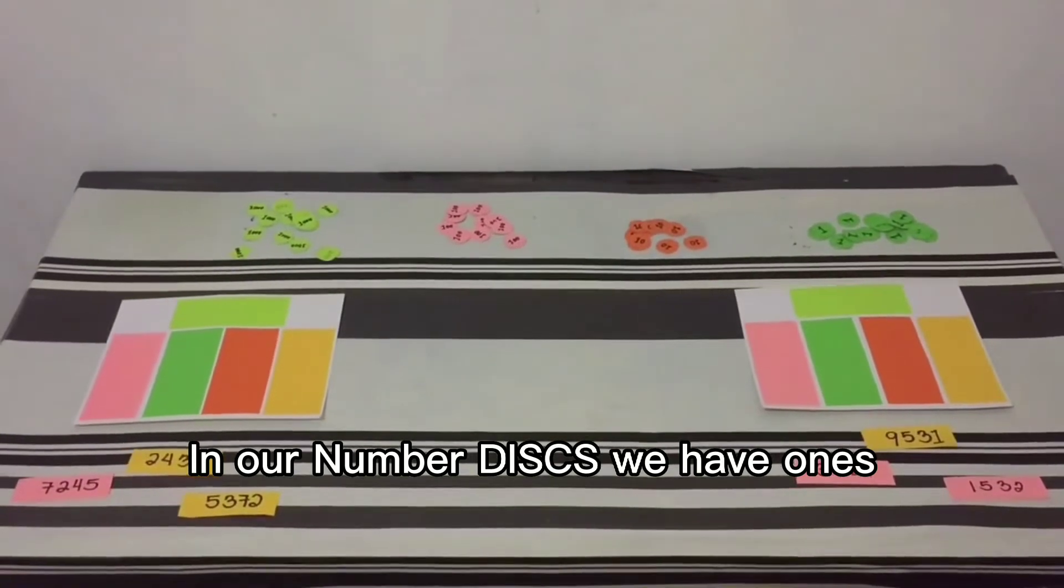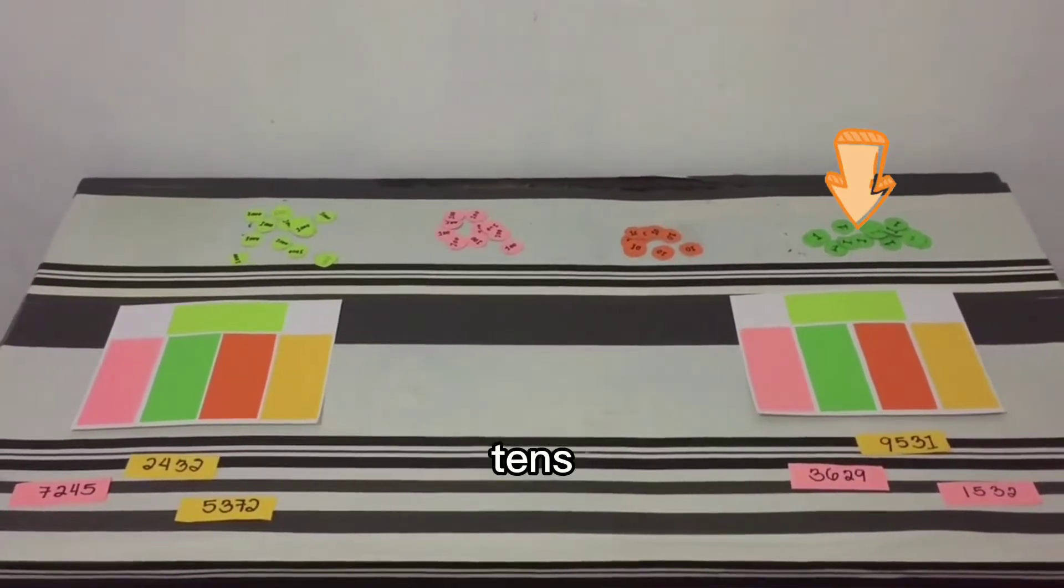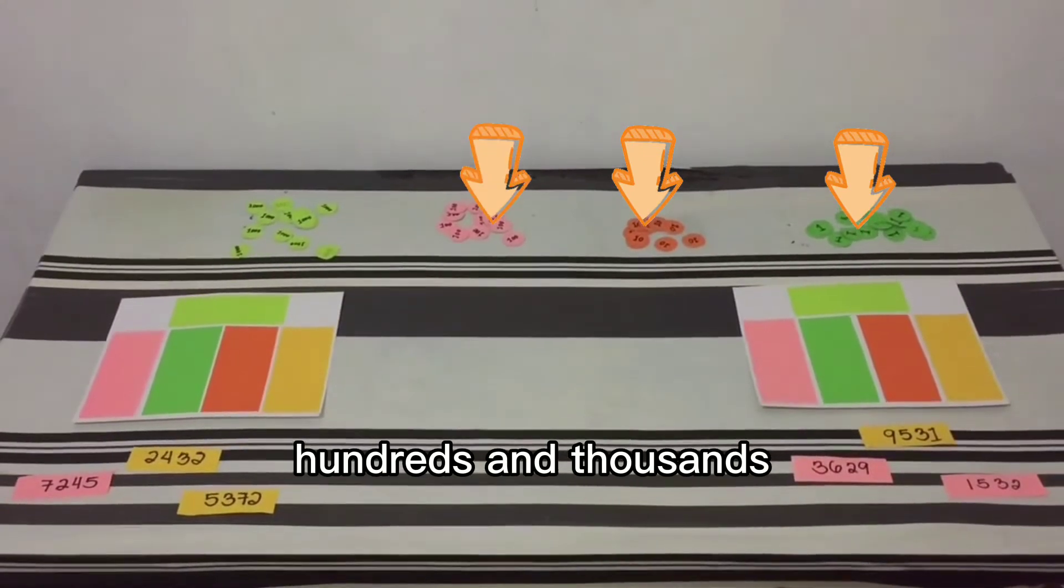With the number disk, we have ones, tens, hundreds, and thousands.